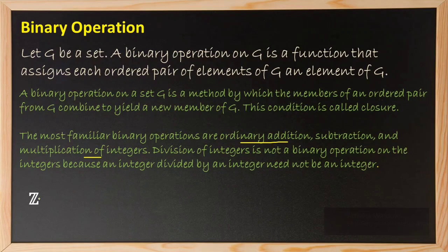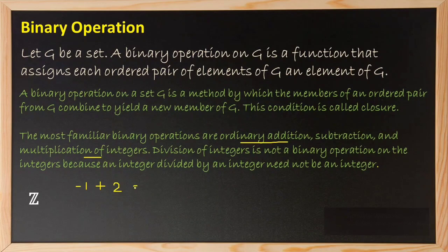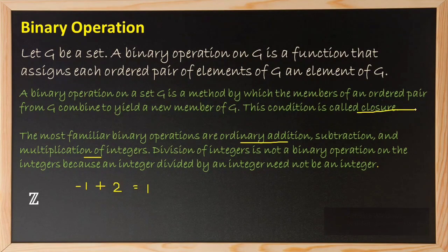I will take any two elements from the set of integers: minus 1 and 2. For ordinary addition: minus 1 plus 2 gives positive 1, and 1 belongs to the set of integers. So ordinary addition is a binary operation on the set of integers — this is called the closure property; we say the set is closed under addition.